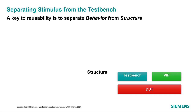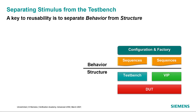As we saw in the last session, the key to reusability in UVM is to be able to separate behavior from structure. The structure defines the test bench and the components that you need to interact with your DUT. The behavior actually defines how you're going to interact with the DUT, whether it's through configuration, the factory, or through sequences that generate transactions to communicate with the DUT.